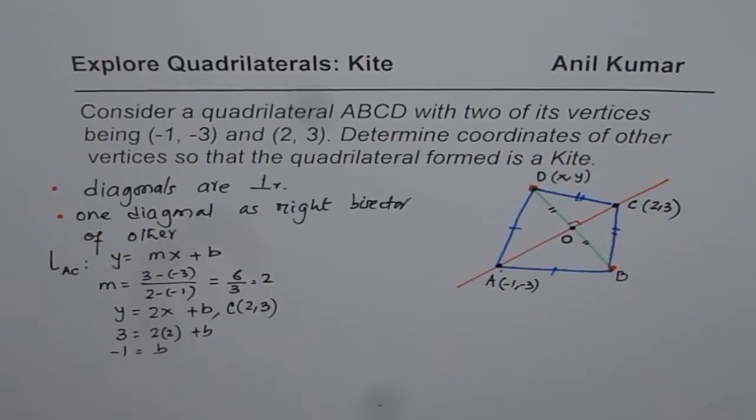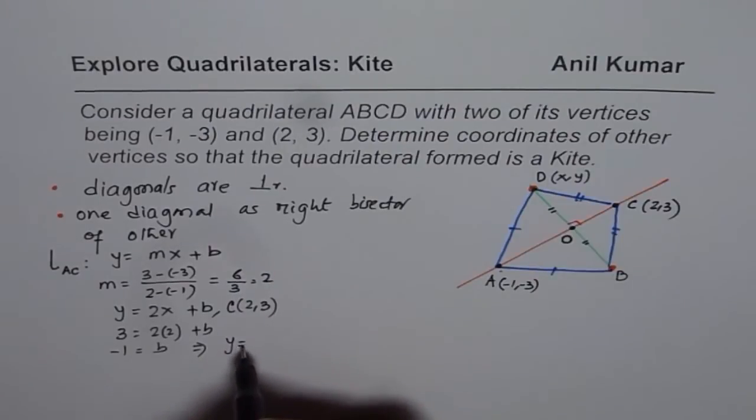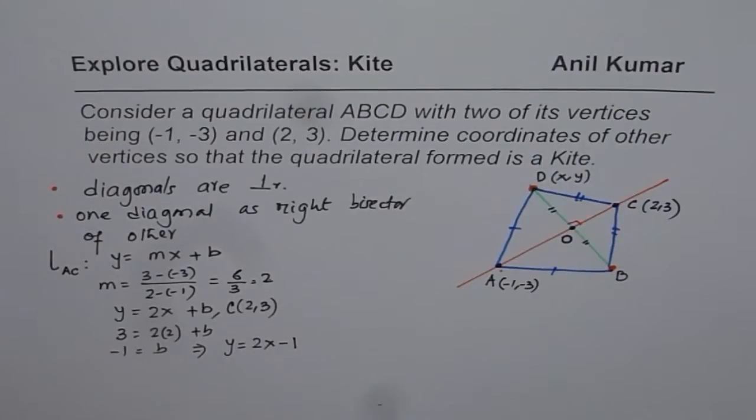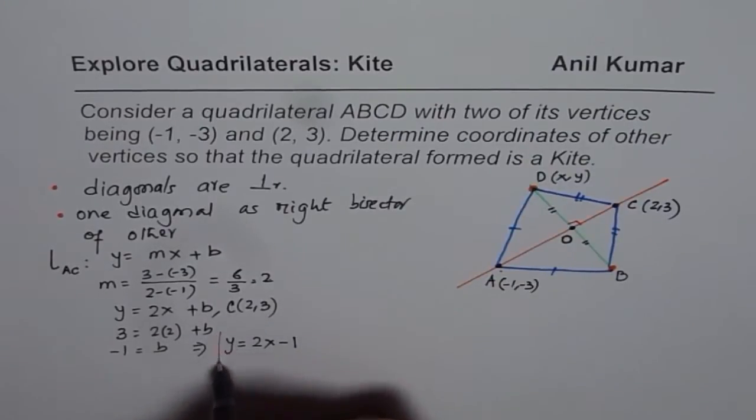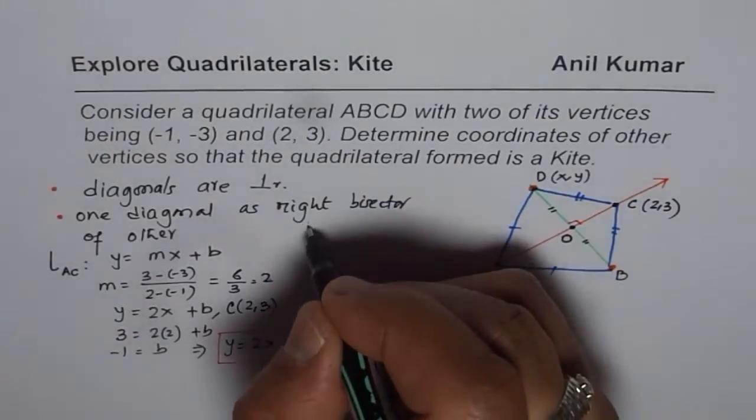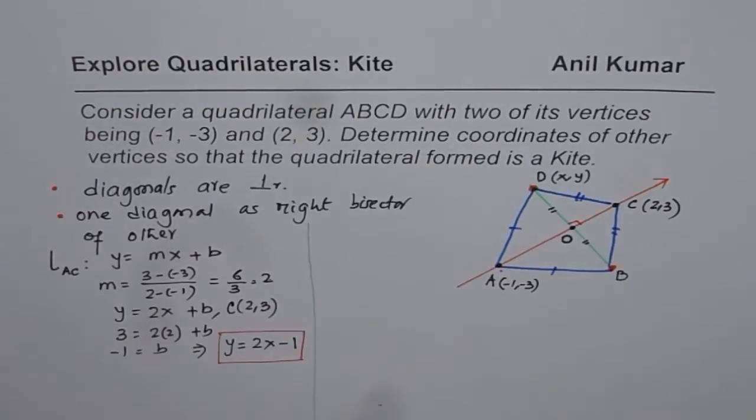And therefore, we get the equation of this line AC, and the equation is Y equals 2, slope is 2, 2X, and B is -1. So that is our equation number 1, and this is for the line AC. So this line has equation 2X minus 1. Let me just divide this page. We will further work on the right side.